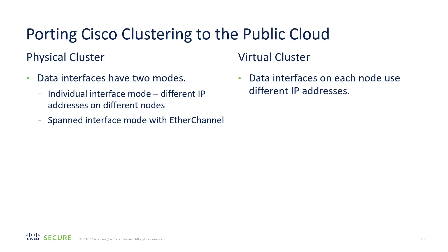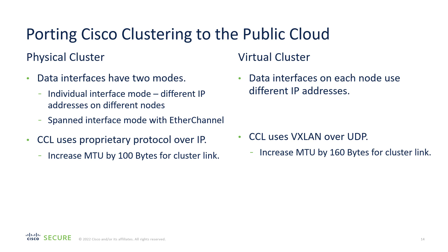To port Cisco clustering into the cloud required several modifications. In the physical cluster, EtherChannel was typically used, but EtherChannel is not available in virtual clusters. Fortunately, there is Individual Interface Mode, where each node has a different IP address, and that is required for virtual clusters. For physical devices, the cluster control link utilizes a proprietary protocol over IP, and you increase the MTU by 100 bytes. For the virtual cluster, the packet is encapsulated in VXLAN and then in UDP, so we have overhead from both the cluster metadata and VXLAN encapsulation. Hence, we have to increase the MTU by 160 bytes on the cluster link to avoid fragmentation.